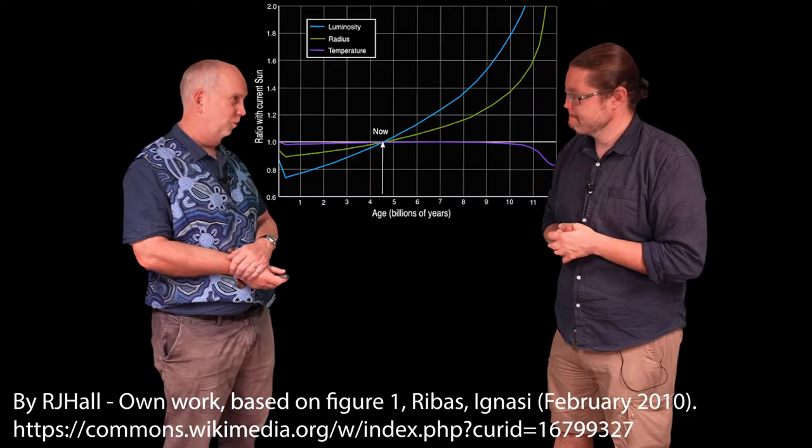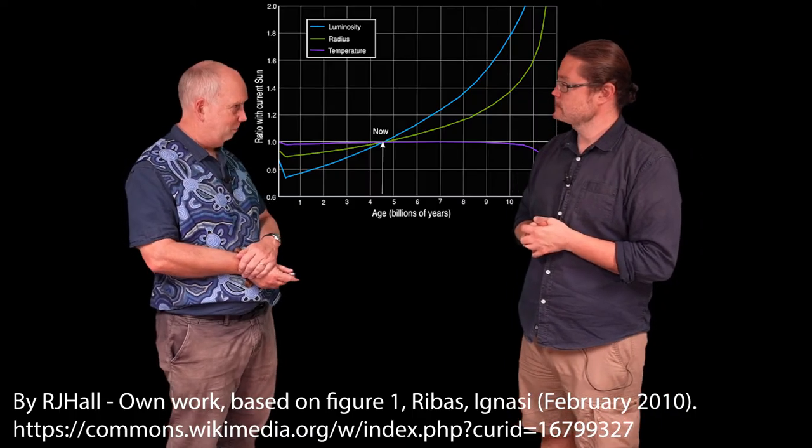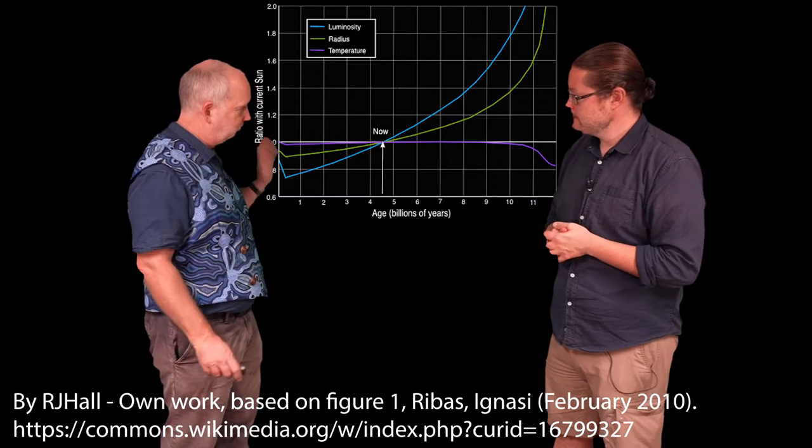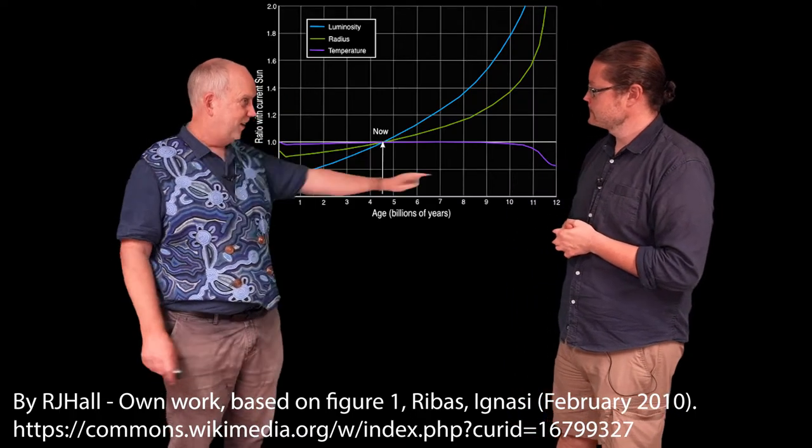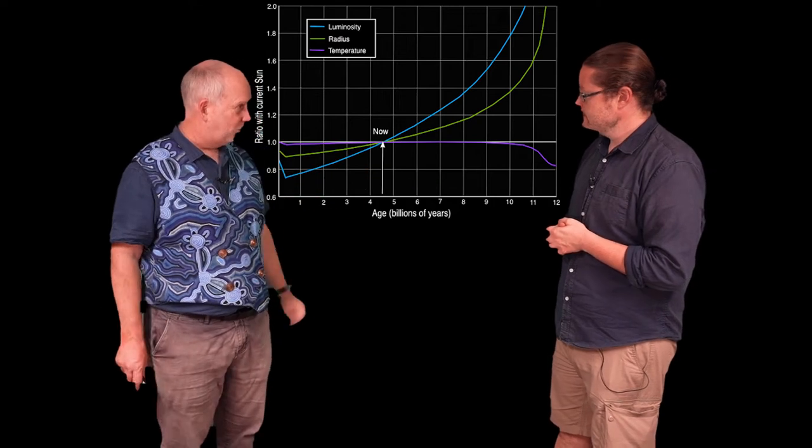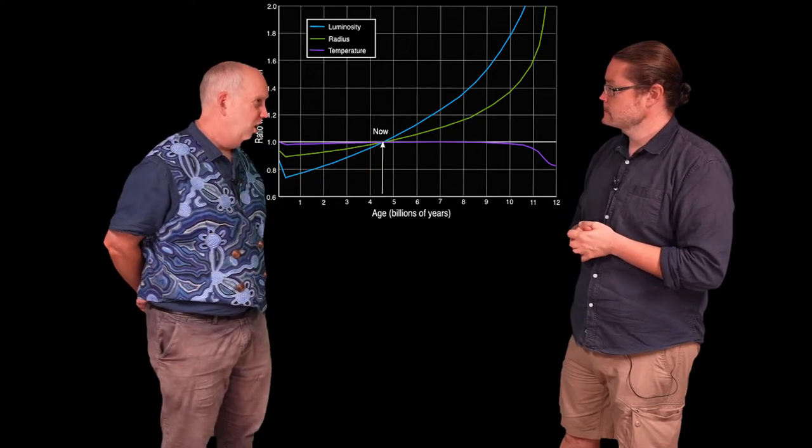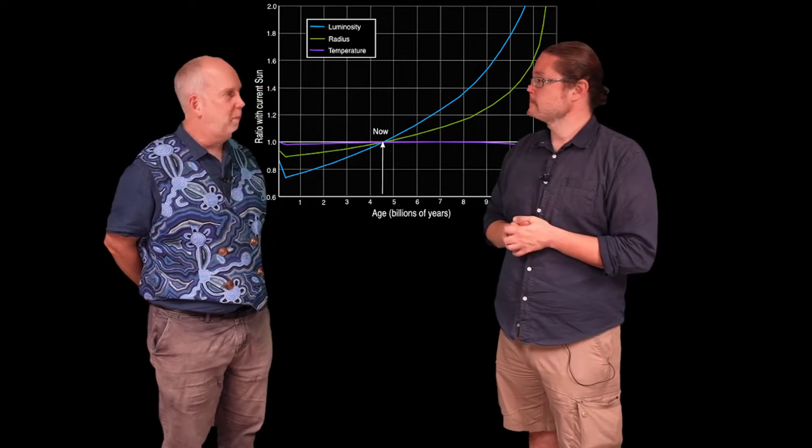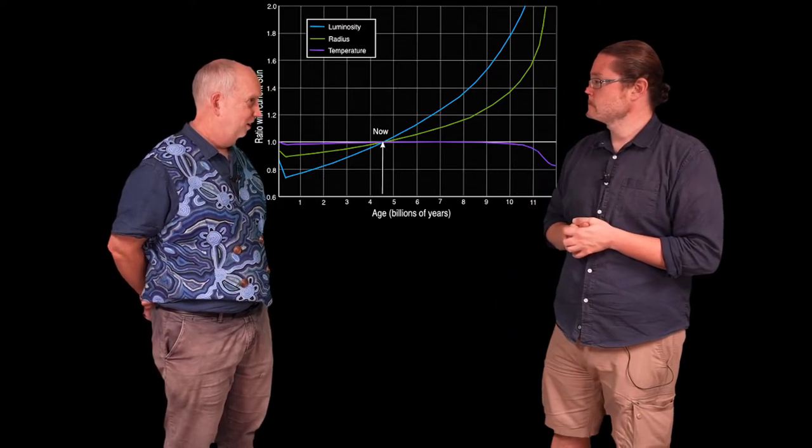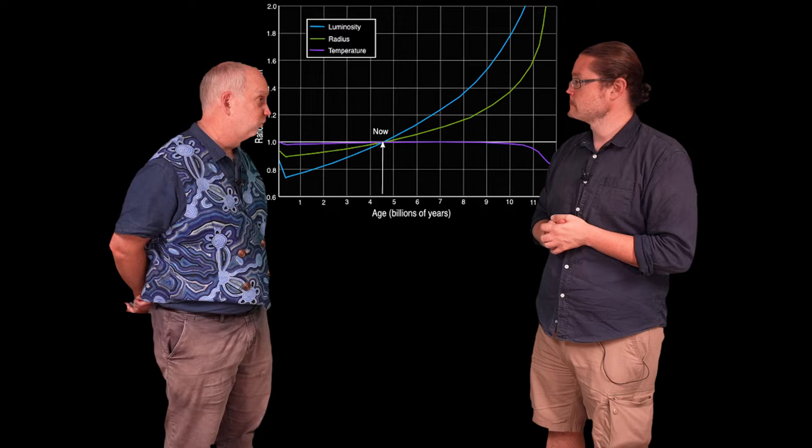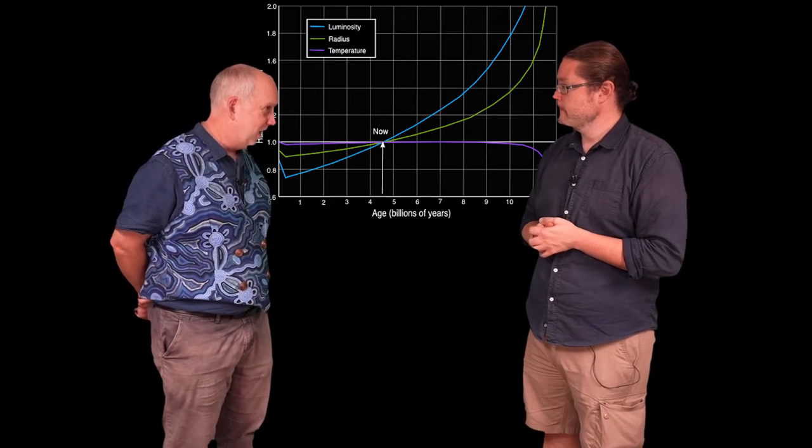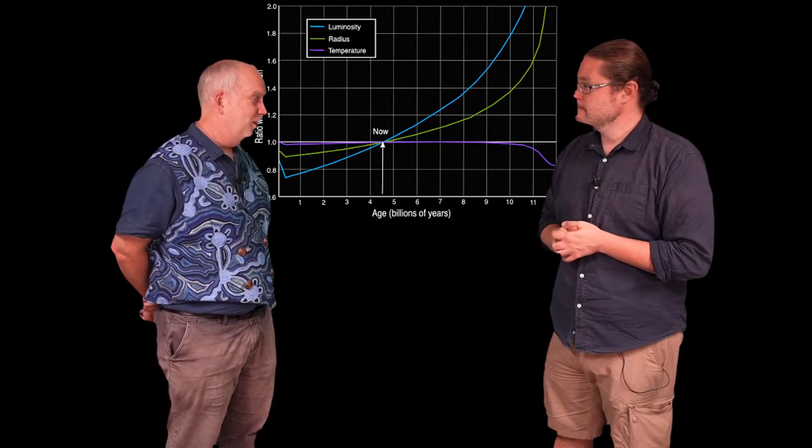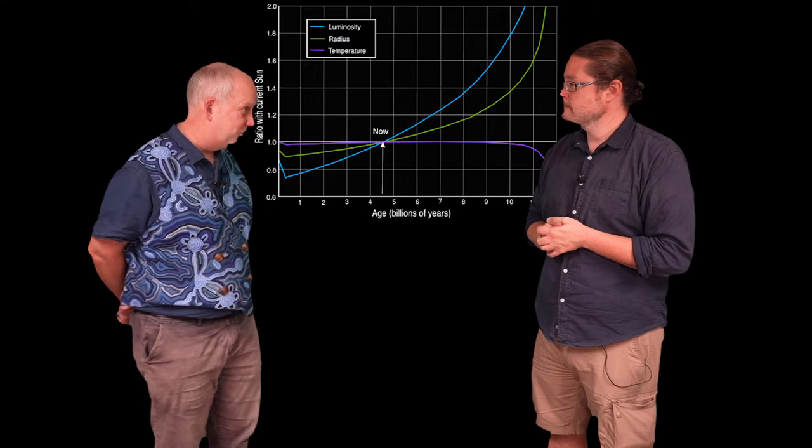It's called the cold early Sun paradox. As we talked about in the stars course, our Sun is actually ramping up in brightness with time. This is a graph of the energy put out by the Sun against time, with today in the middle. What you can see is that nearly four billion years ago, the Sun, because of reasons to do with the nuclear reactions in its core, was about 30% cooler than it is and put out less radiation than it does today. Right now Mars is a lot colder than Earth, so four billion years ago it should have been even colder still.